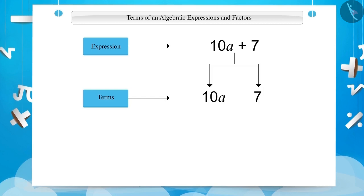In the product of a variable and a number, the number is called the coefficient. For example, 10 is a coefficient of a in the expression 10a.